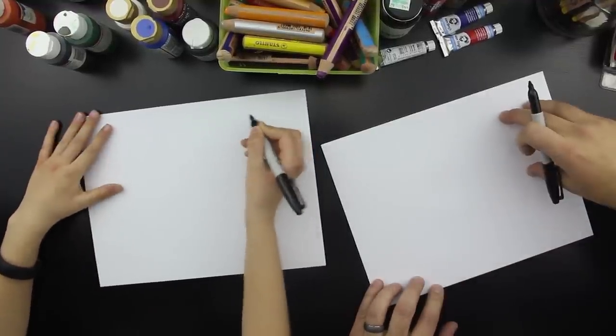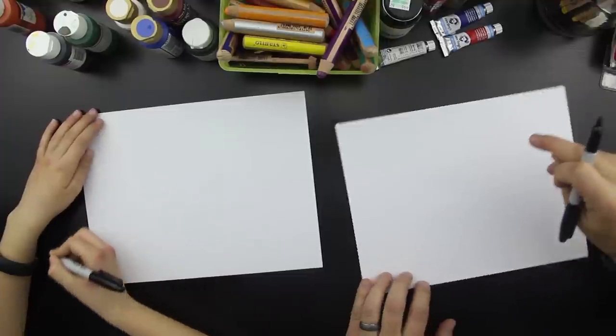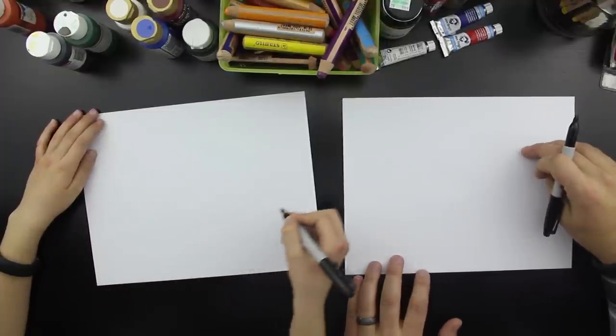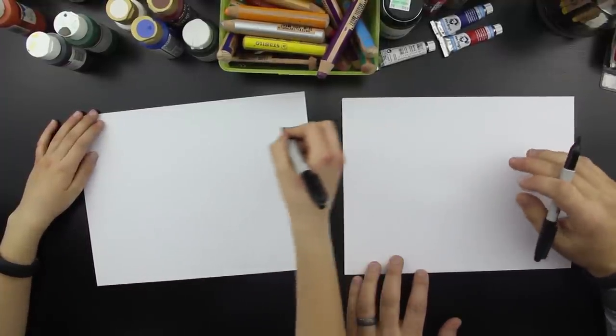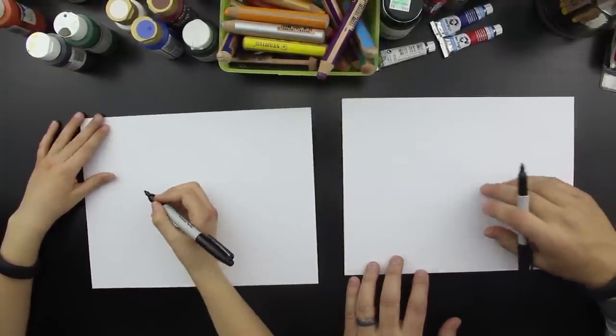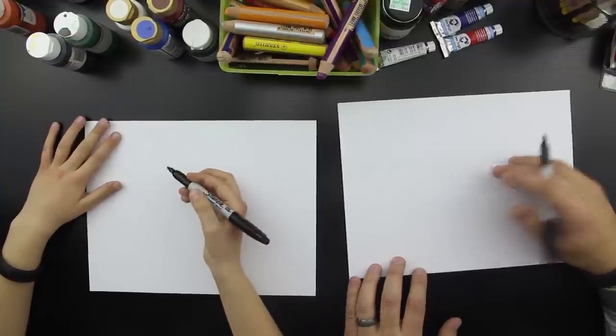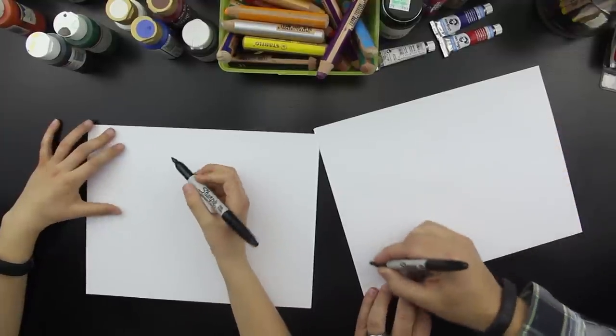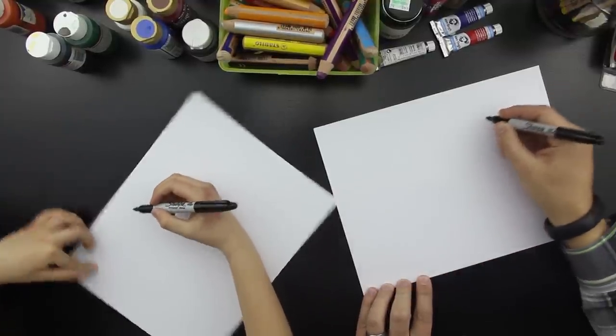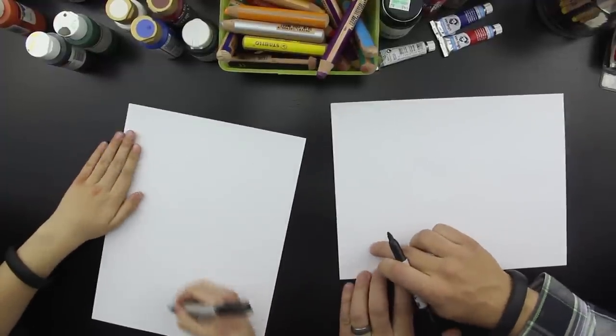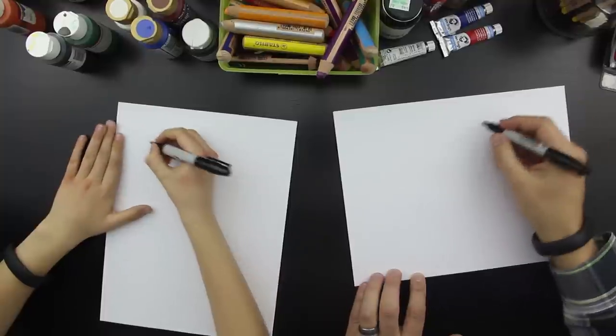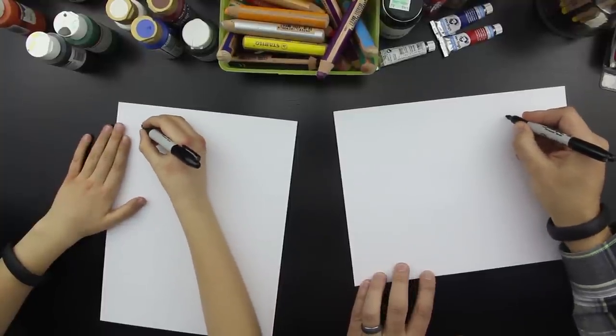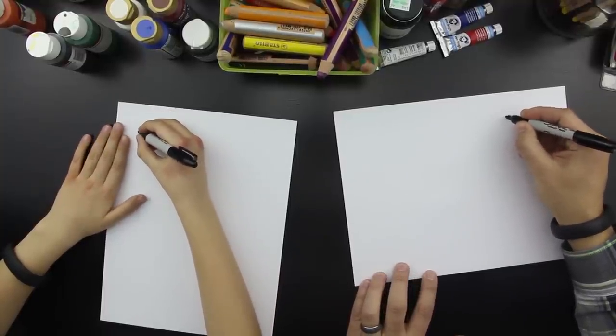You ready? Got your marker? Okay, first step we're gonna draw it really long and we're gonna draw the top of it like it's going down the track. We're gonna draw the four-man. There's a couple different size bobsled teams. We're gonna draw the big, I think it's the biggest one, the four-man bobsled. The top of it we're gonna draw it diagonally. The front of it's gonna be here and the back of it's gonna be back here.